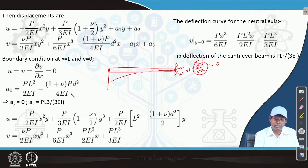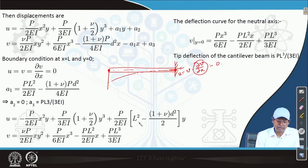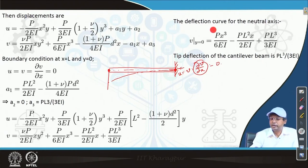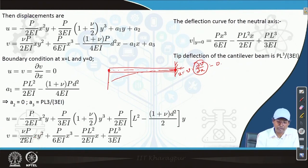Solving those boundary conditions gives: a1 = PL²/(2EI) - (1 + ν)PD²/(4EI), a2 = 0, and a3 = PL³/(3EI). Substituting these values back — since a2 = 0 the corresponding y-function term drops out — we obtain the complete expressions for u and v. For the deflection of the neutral axis, we set y = 0 in the v expression.